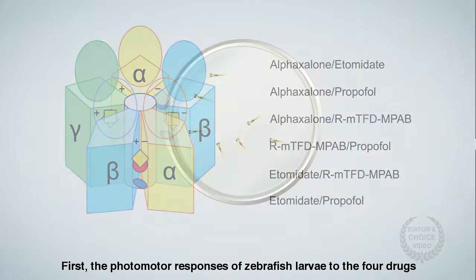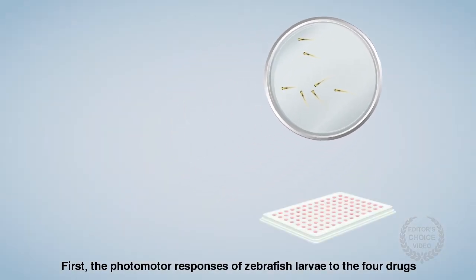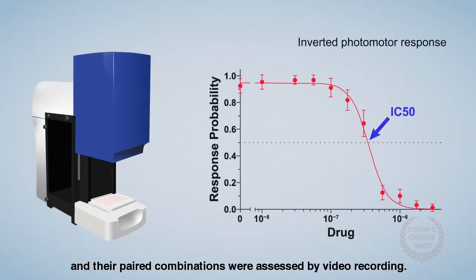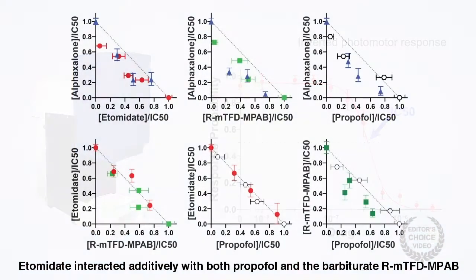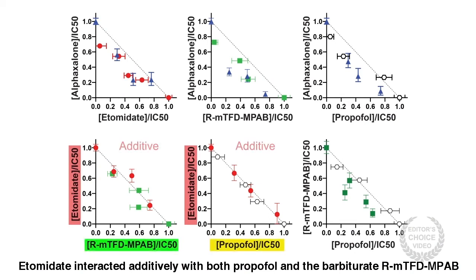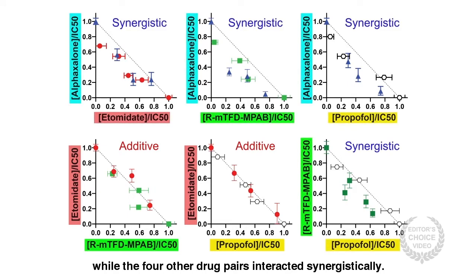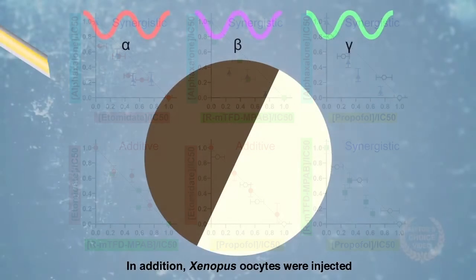First, the photomotor responses of zebrafish larvae to the four drugs and their paired combinations were assessed by video recording. Etomidate interacted additively with both propofol and the barbiturate RMTFD-MPAB, while the four other drug pairs interacted synergistically.